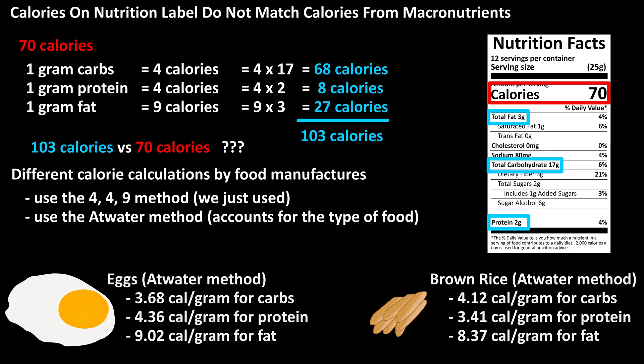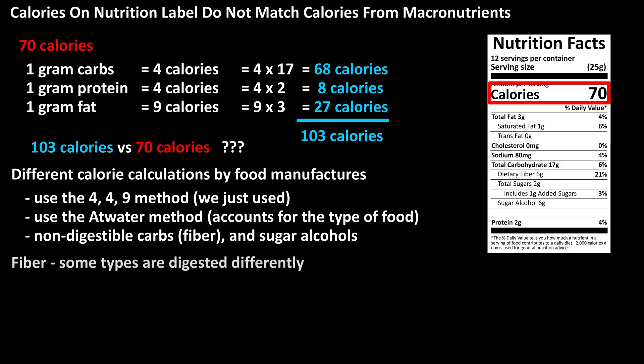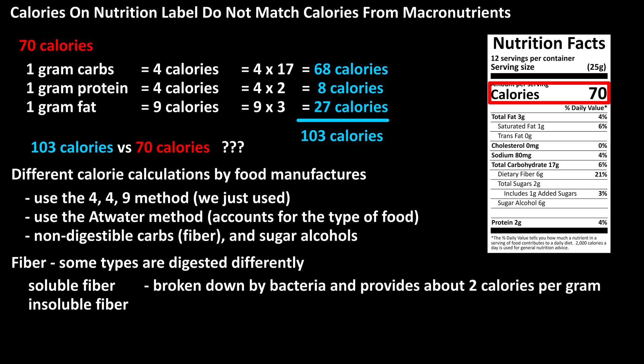The next discrepancy could be from adjusting for non-digestible carbohydrates and sugar alcohols. Fiber is a non-digestible carbohydrate, at least in the way other carbohydrates are digested. There are two types of fiber: soluble fiber and insoluble fiber. Soluble fiber does actually provide some calories, as it is broken down by bacteria in the large intestine — about two calories per gram. Insoluble fiber does not provide any calories at all. While fiber is listed on nutrition labels, most companies do not list the amount of each of the two different types of fiber, so sometimes companies assign the two calories per gram for the soluble fiber.